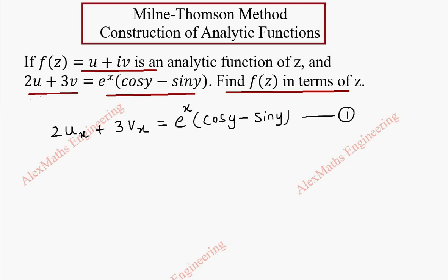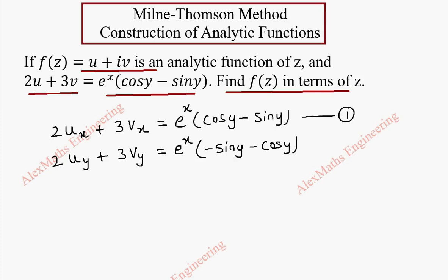Now, the equation 2u plus 3v equal to e power x into cos y minus sin y, we are going to do partial derivative with respect to y. So 2uy plus 3vy equal to e power x — e power x is a constant which stays as it is — and partial derivative of cos y is minus sin y, and minus sin y gives minus cos y. This is our second equation.